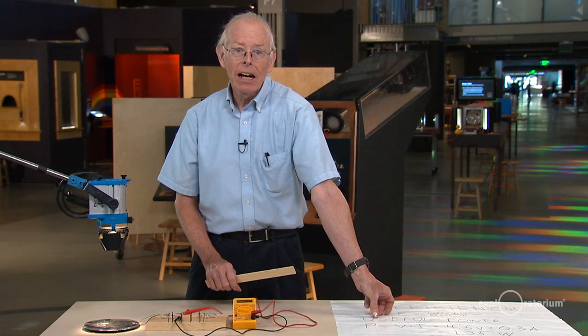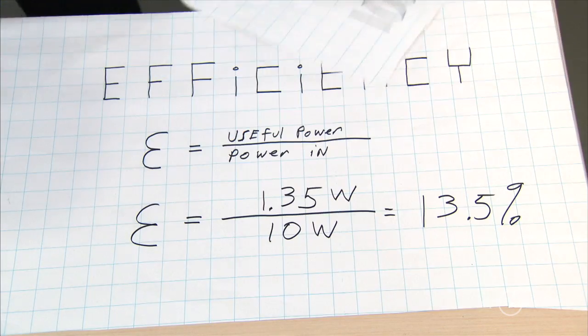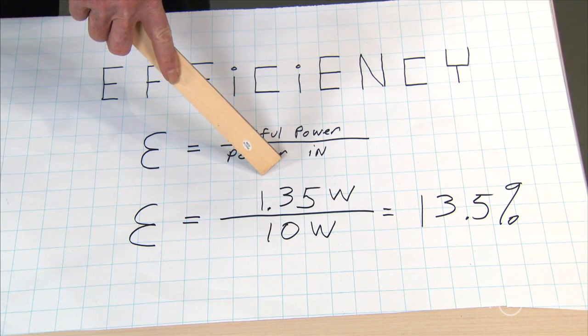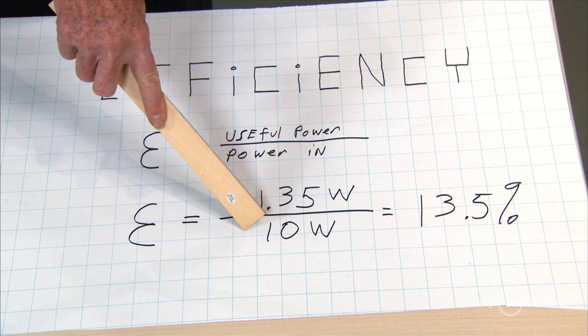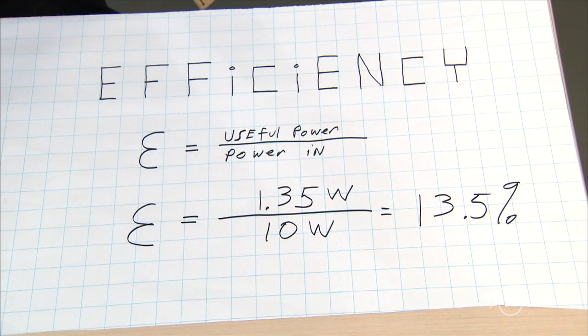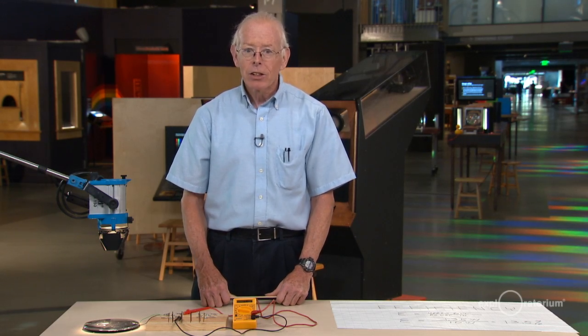So now we put it all together and we find out the maximum efficiency of this solar cell. We get 1.35 watts out of it. We put 10 watts into it. And that means the maximum efficiency of my solar cell is 13.5 percent. That's a really good solar cell.